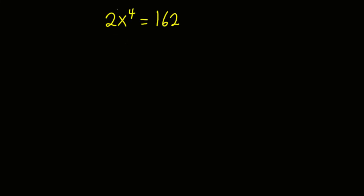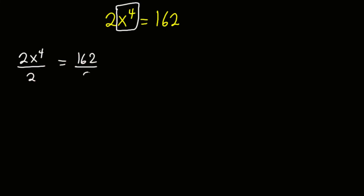To solve this problem, we are going to make x exponent 4 the subject, and we can only do this by dividing both sides of the equation by 2. So 2x exponent 4 divided by 2 equals 162 divided by 2. The 2s cancel, and we are left with x exponent 4 is equal to 81, since 162 divided by 2 is 81.